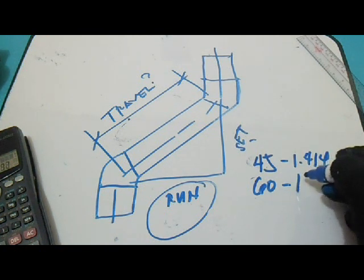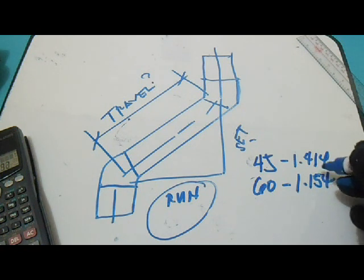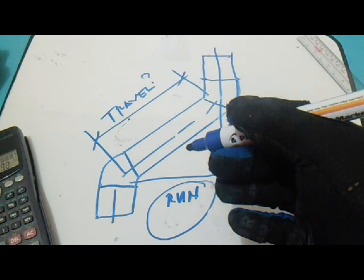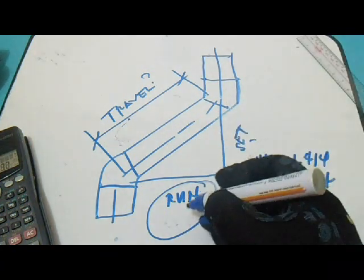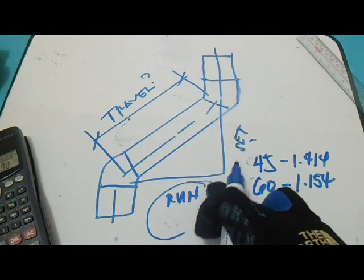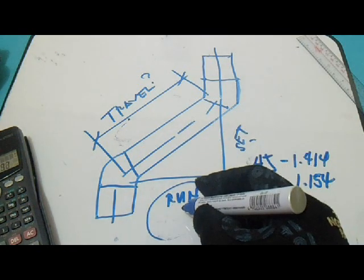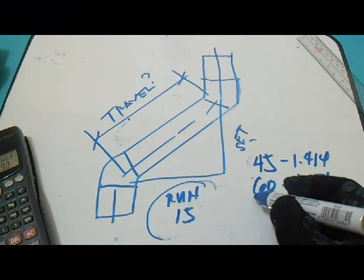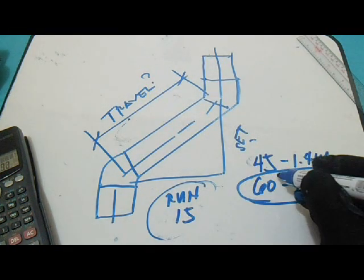So let's try it for the run again. So our run is 15, let's compute this travel for the 60 degrees. So our run is 15, multiply it to 60 degrees.